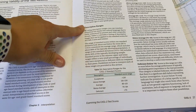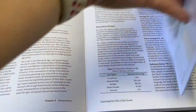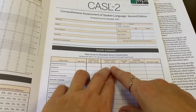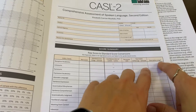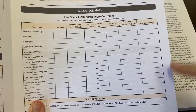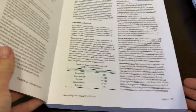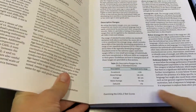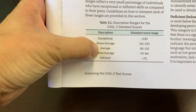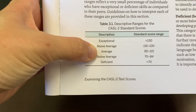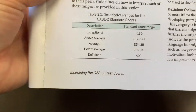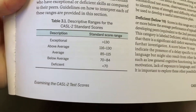Numbers are great but not always the most helpful for everyone. So the descriptive range is something you want to make sure you're adding to your record form — there's a spot for it at the end. After you have the raw score, standard score, confidence interval, percentile rank, and age equivalent, you want to note the descriptive range. For the CASEL 2, this is on page 27. Any standard score between 85 and 115 is considered average, with descriptive labels above and below. These are wonderful to include in your written reports.